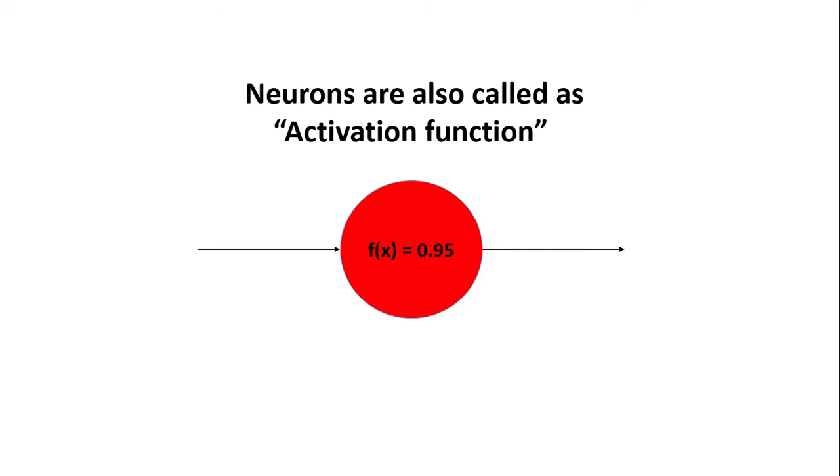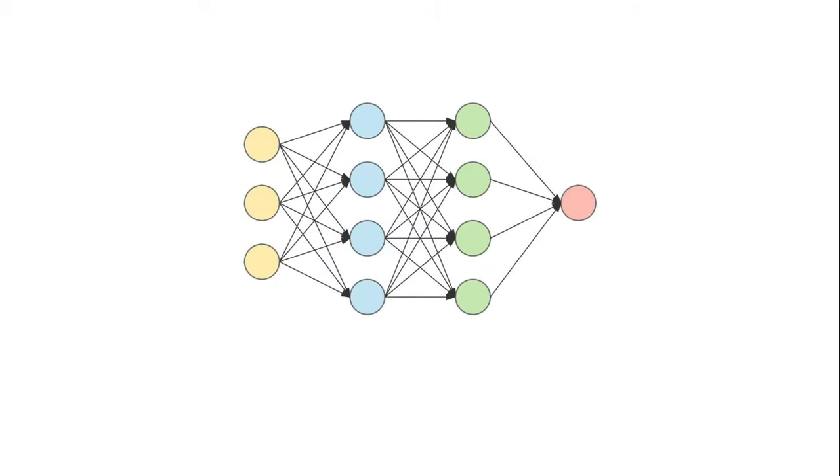Due to these activations of neurons, we can also call these neurons as activations. And as these are functions, we can call them activation functions. The collection of these neurons forms layers.